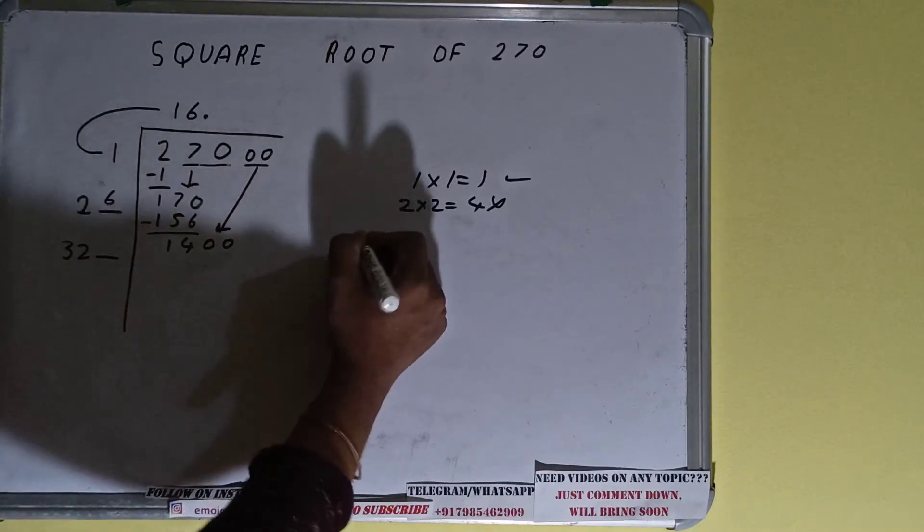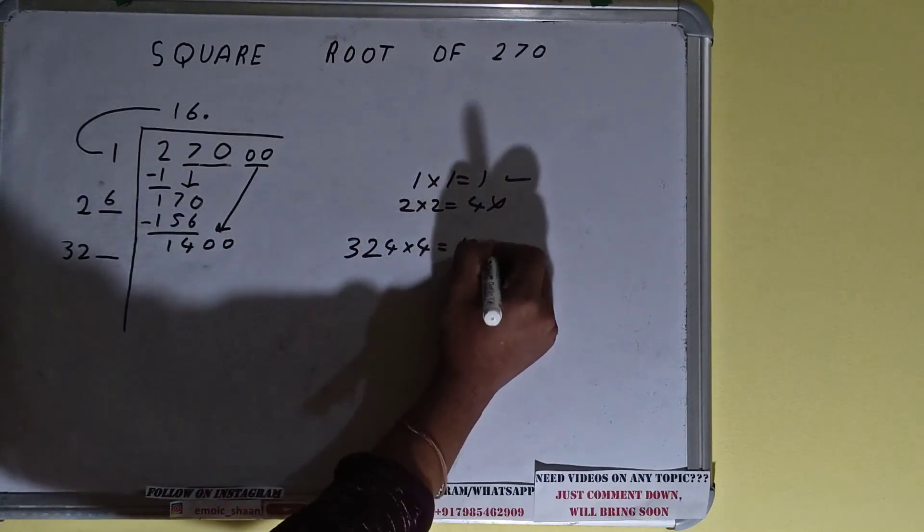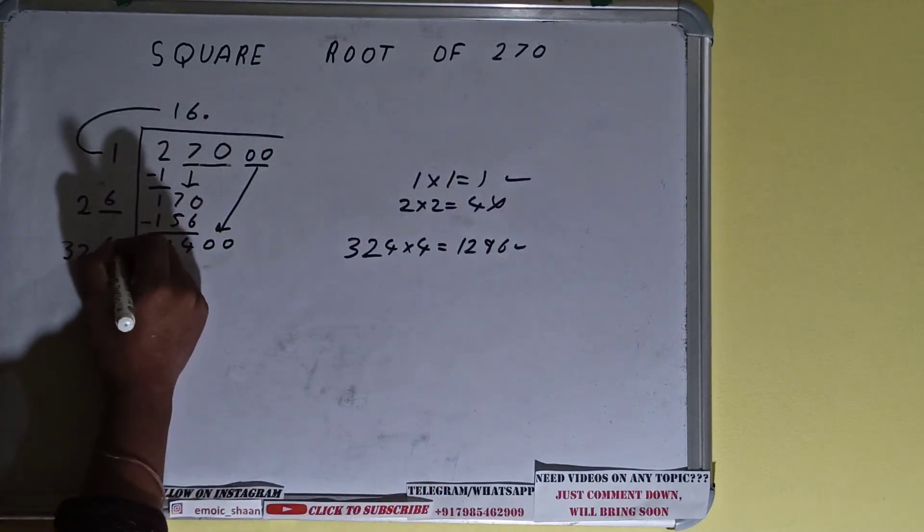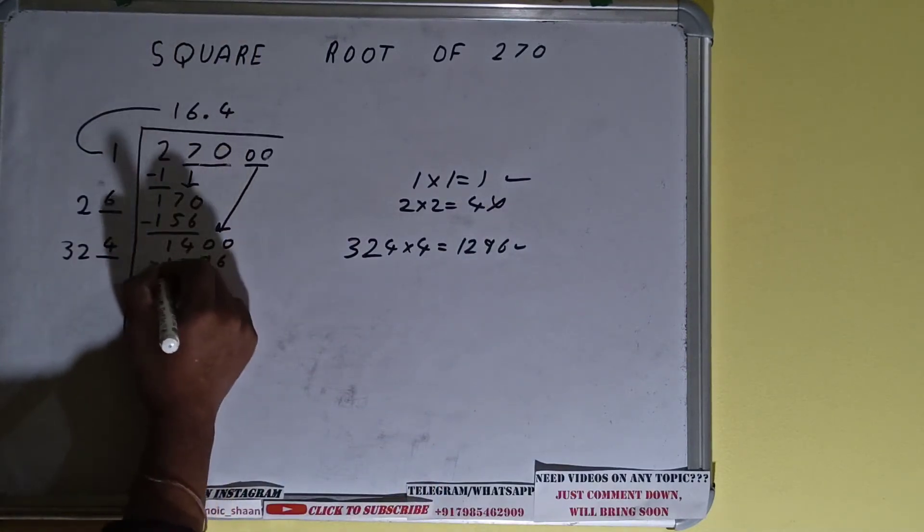Now we can try four times. 324 into four we can try, it will be 1296. That is good to take. So four here and four here, 1296. Subtract it.